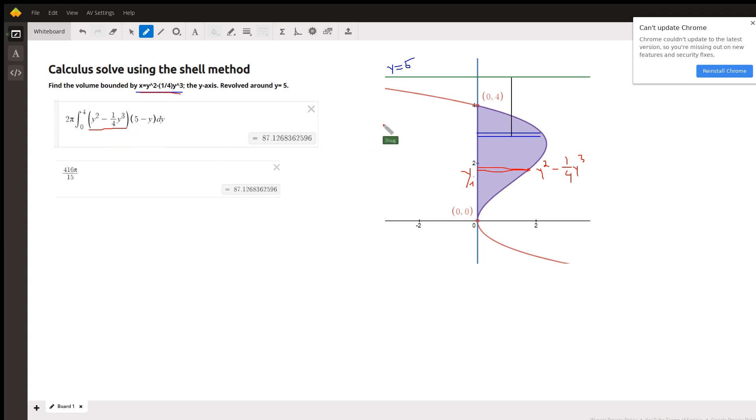The average radius from the axis of revolution to a typical center of a shell is 5 minus this y coordinate right here.